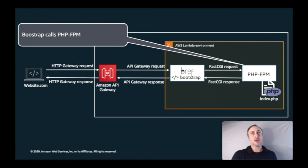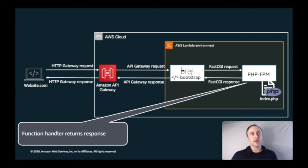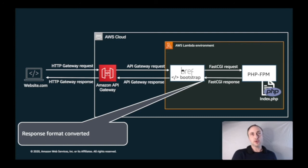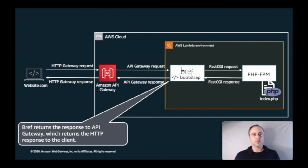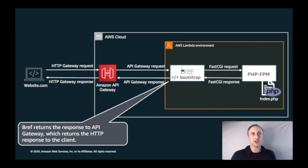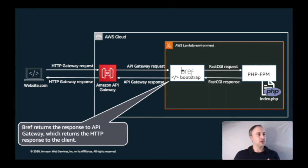The Bref bootstrap calls PHP-FPM through the FastCGI protocol, PHP-FPM runs the PHP handler and returns its response. The Bref bootstrap then converts the FastCGI response back to API Gateway format, enabling it to return the response to API Gateway, which returns an API response to the client. All of this enables a single Lambda function to take an HTTP request, run your code, and return an HTTP response — without having to change very much about the way you build your PHP application.